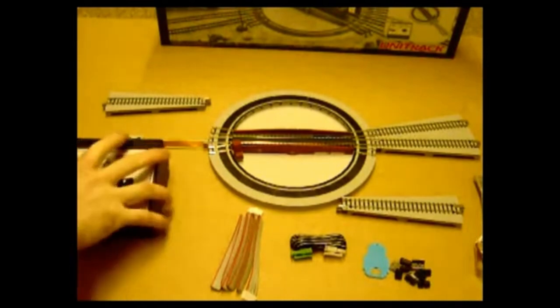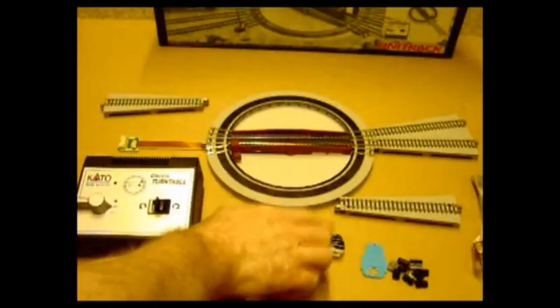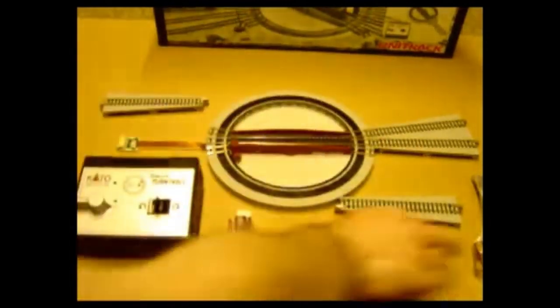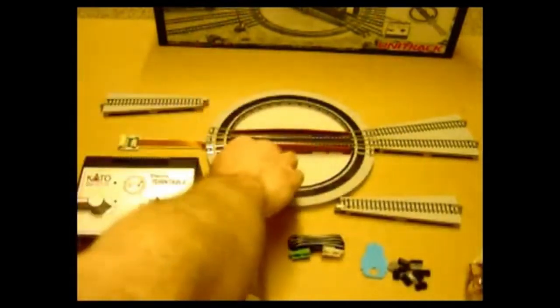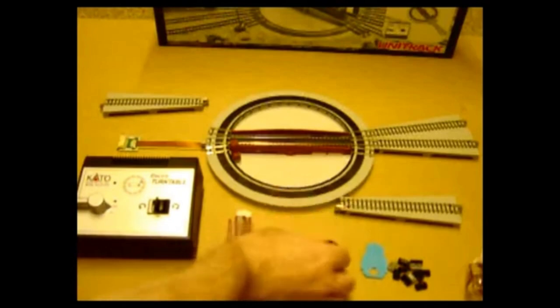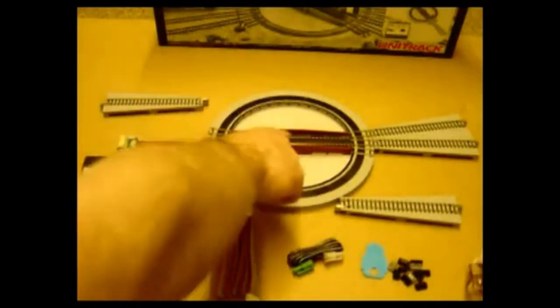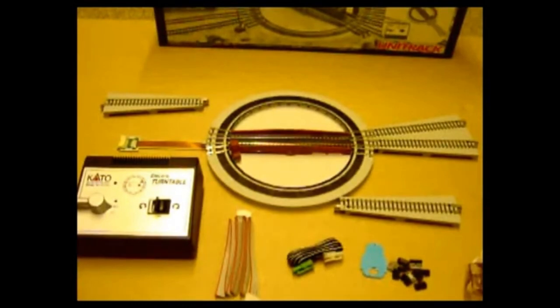In the pack you get the turntable control unit, ribbon cable that goes to the turntable, four exits, a bundle of detailing parts including buffers for the unused exits, and what they call a jump lead which takes the power to the bridge rails from your Unitrack power pack or other power pack.